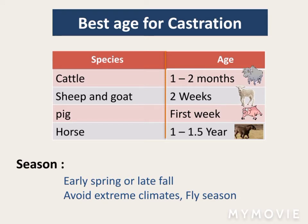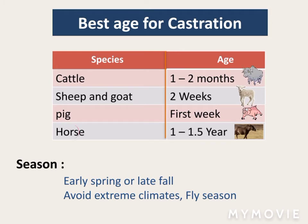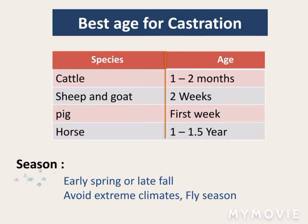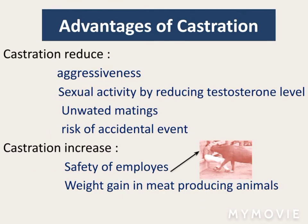it is two weeks, for pig the first week, and for horse one to 1.5 years. The best season for castration is early spring or late fall. Avoid extreme climate or fly season.